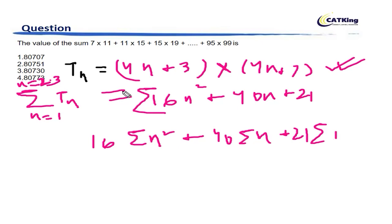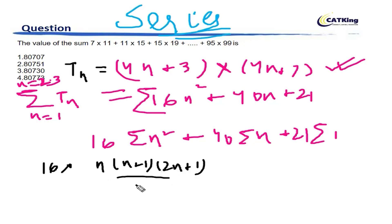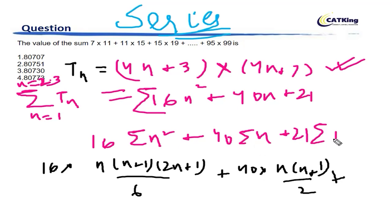This is part of the series topic, so I hope you have all revised it. The sum of n² terms is given as n(n+1)(2n+1) divided by 6. The sum of n terms is n(n+1) divided by 2 — this you already know. And finally, the sum of all ones will simply be n. Now we have to put n equal to 23.